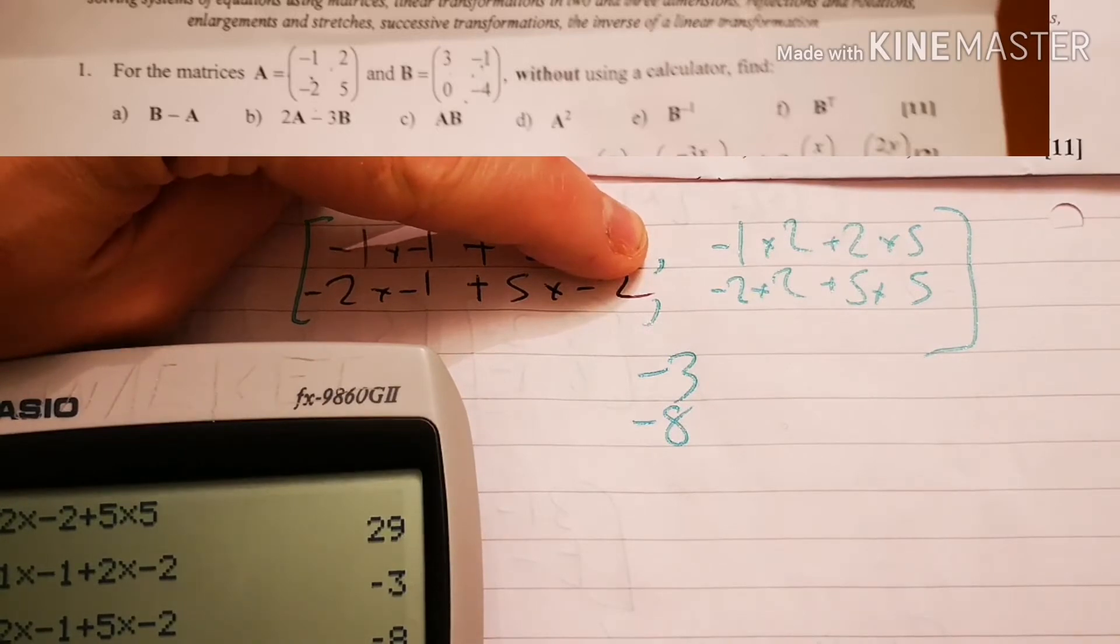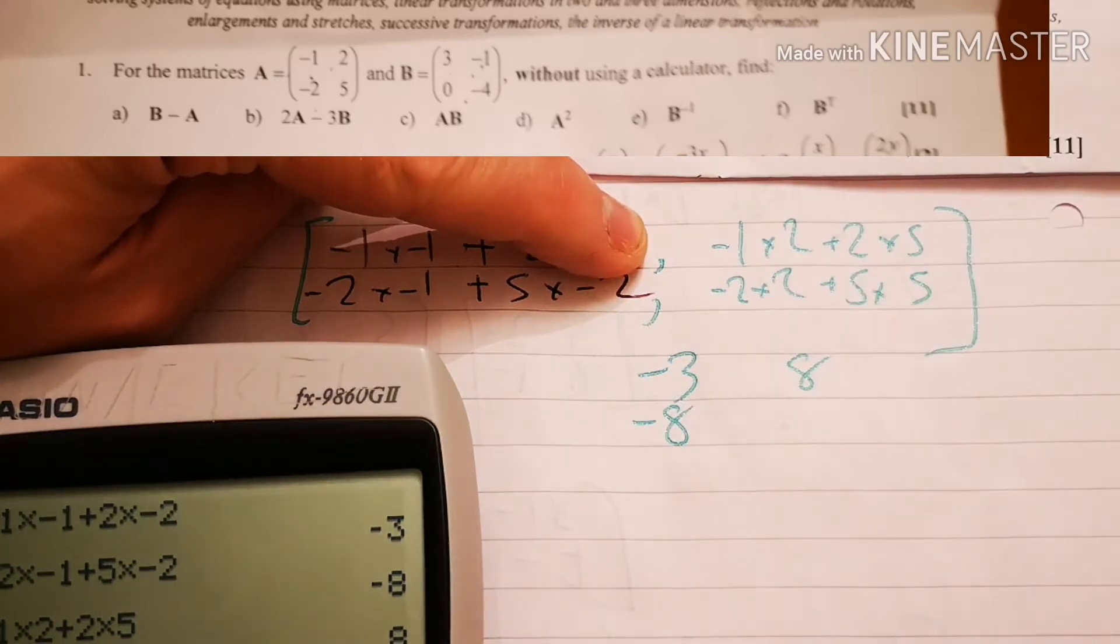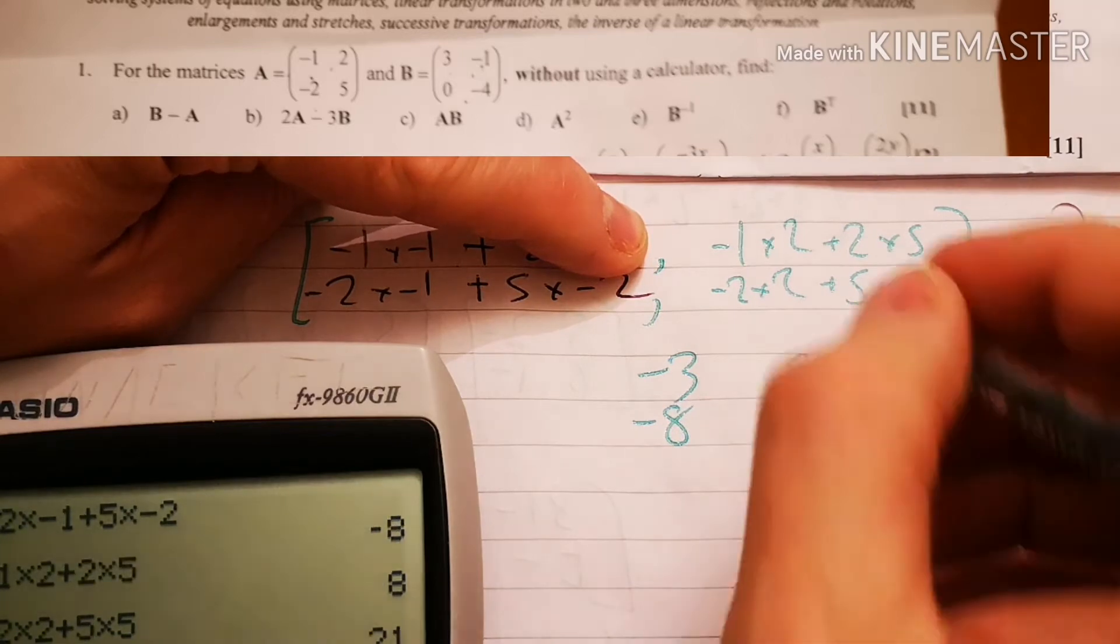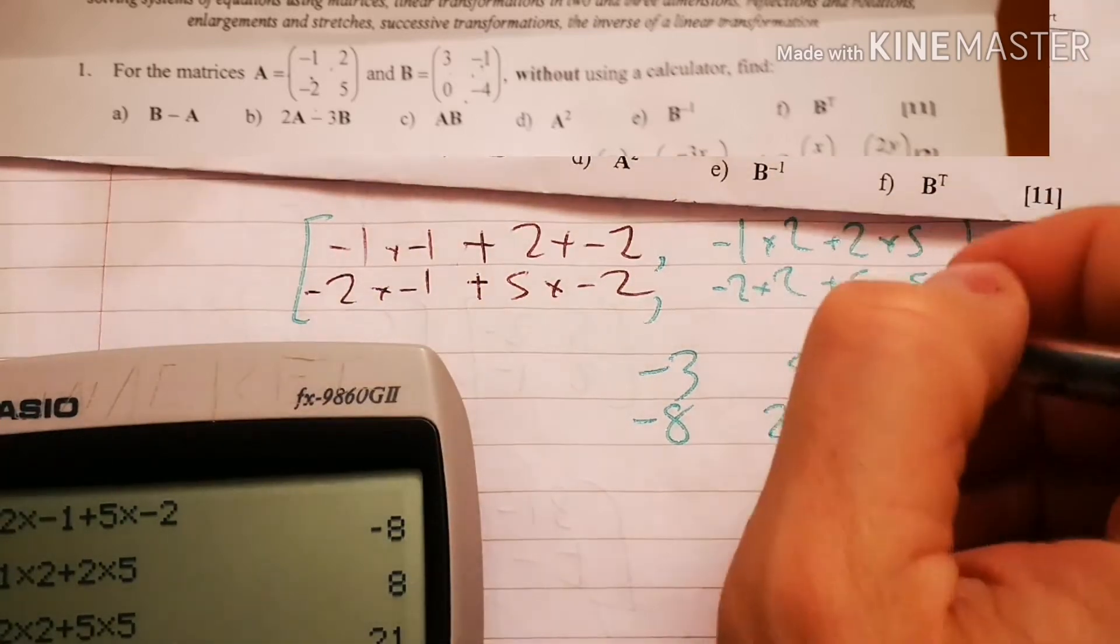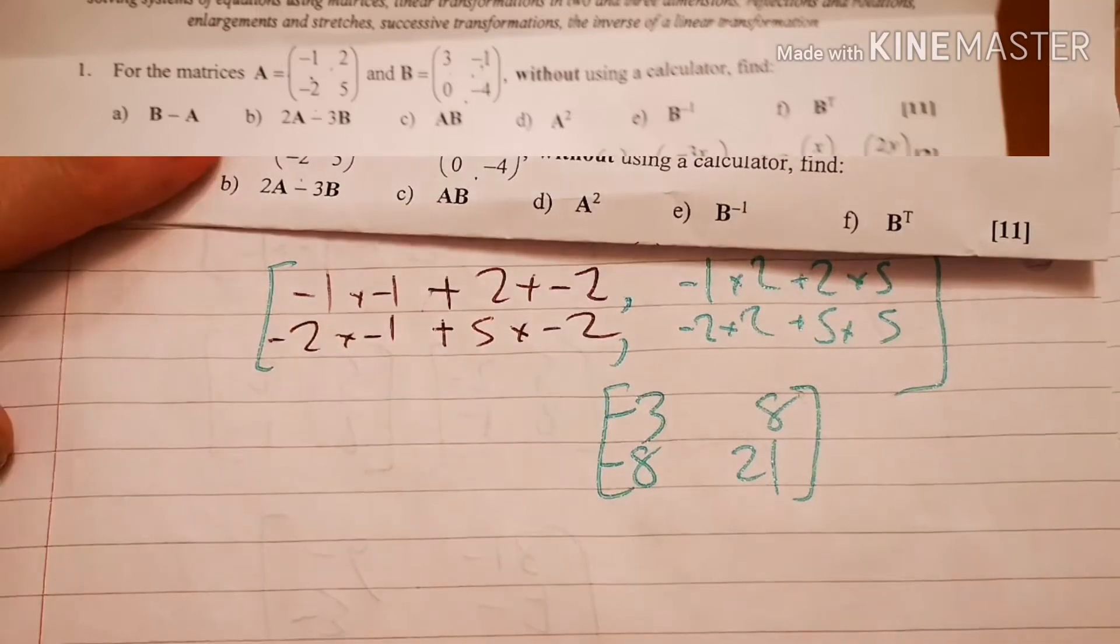Yeah, I'll do minus 1 times 2. Plus 2 times 5. Which is 8. Minus 2 times 2. Plus 5 times 5. Which is 21. Let's make it look like an actual matrix. Okay.